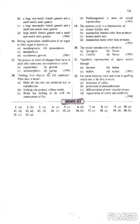Question 17: the process of a series of changes from larva to adult after embryonic development is called metamorphosis. The options were regeneration, growth, metamorphosis, and aging. The correct answer is metamorphosis.